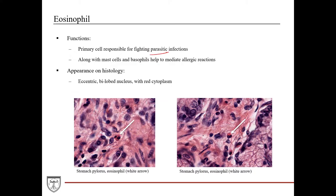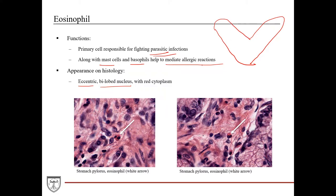Eosinophils are the primary cell responsible for fighting parasitic infections. In a patient with a parasitic infection, their complete blood count will have elevated eosinophils, which is a clinical marker. Eosinophils, along with mast cells and basophils, also help mediate allergic reactions. Their appearance on histology is pretty unique: they have an eccentric bilobed nucleus — almost like a boomerang or V-shape with two lobes. The other big hallmark is red eosinophilic cytoplasm, hence the name eosinophil.